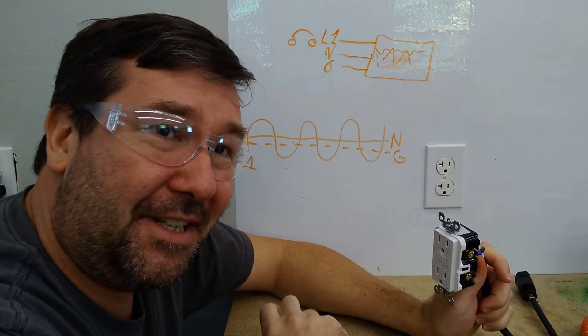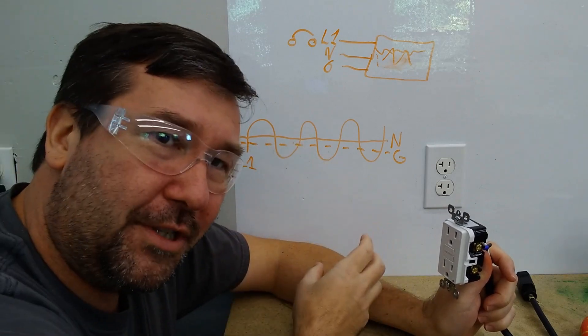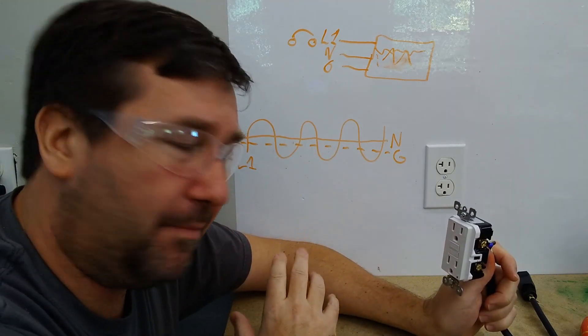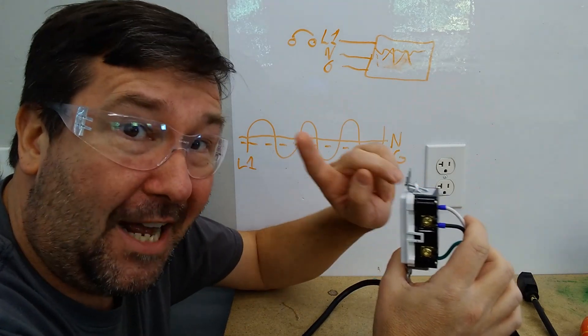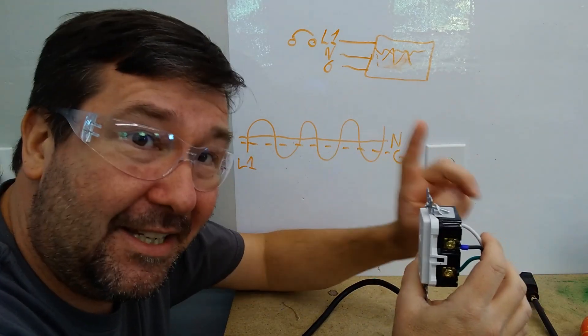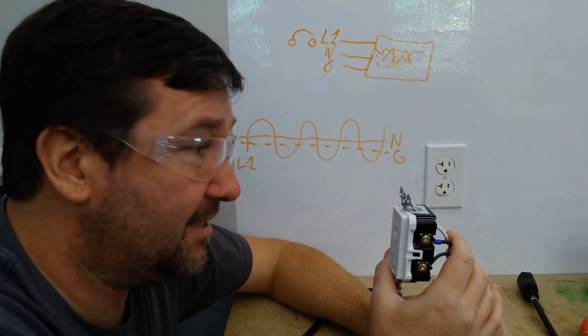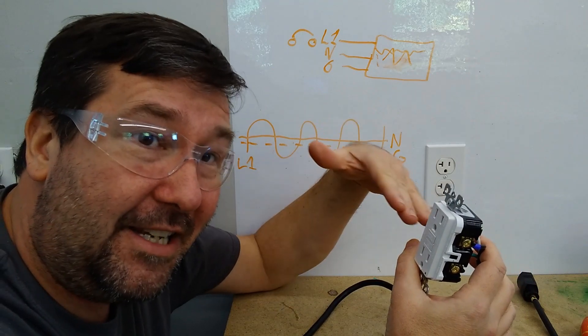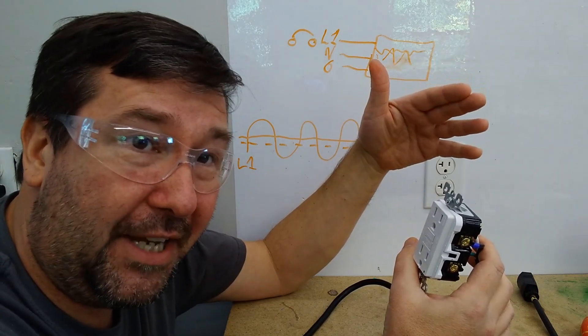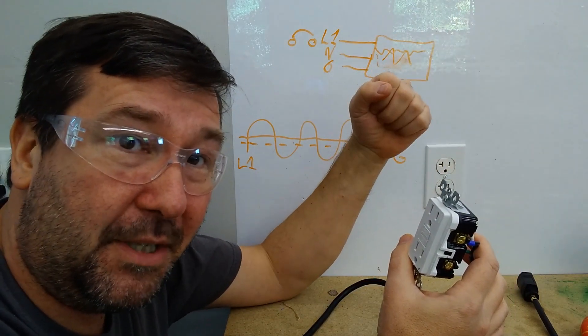So then he had two GFCIs, why was his shore one tripping and his boat one not tripping? Well, a modern GFCI has to trip at five milliamps. And his boat at the time it was built, the regulation said it could be 25 milliamps. So he had a leakage greater than five milliamps, but less than 25 milliamps.